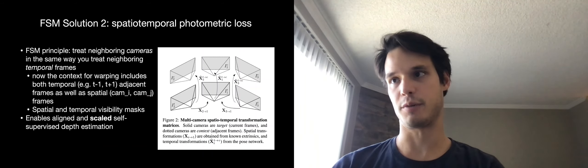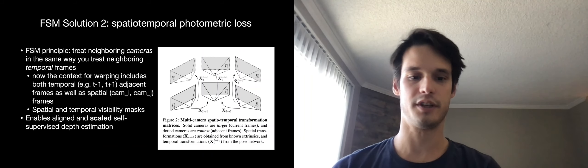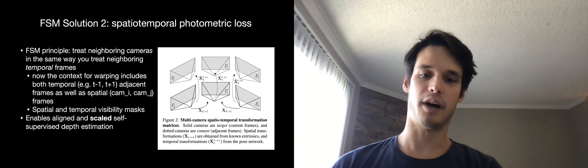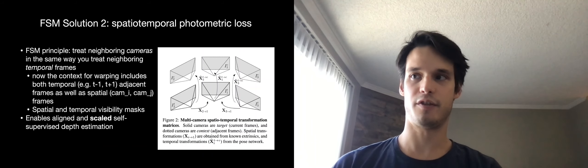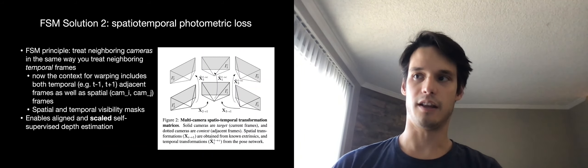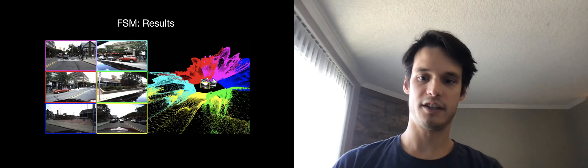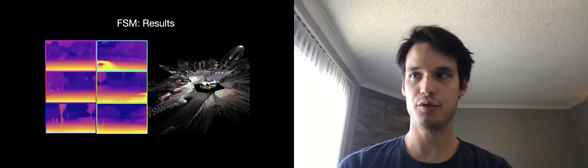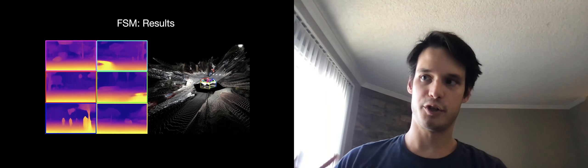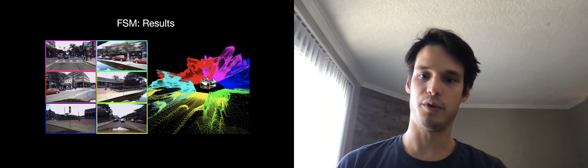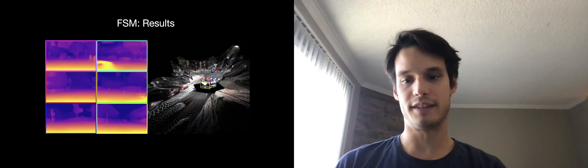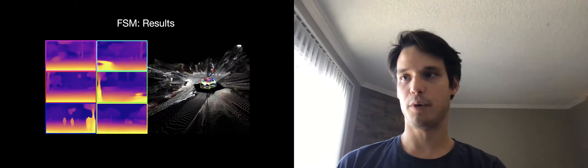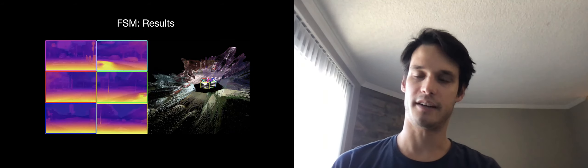The depth predictions are now metrically scaled thanks to the ground truth extrinsics. And the point clouds predicted from different images are now aligned. We can see this qualitatively: we predict six independent depth maps and use the extrinsics to re-project them into the world, getting one single dense 360-degree point cloud with absolutely no post-processing or alignment after the fact necessary.